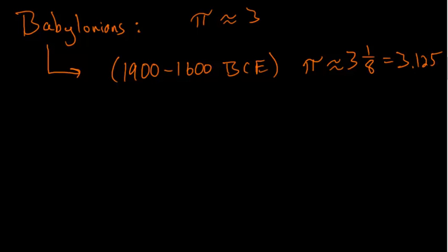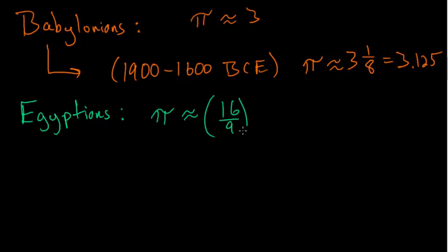And around this same time period, we also had the Egyptians, and through an ancient document we found known as the Rhind Papyrus, we know that the Egyptians used a value of pi that was 16 divided by 9 squared, which as a decimal is about 3.1605.